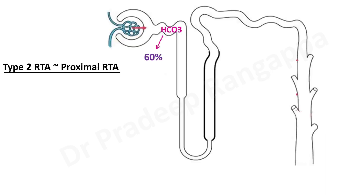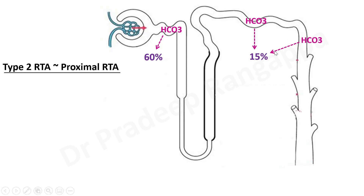Type 2 is proximal renal tubular acidosis — the whole problem lies in the proximal convoluted tubule. Here there is reasonable bicarbonate absorption, so urine pH will be less than 5.5 — the key delineating feature between type 1 and type 2. About 60% of bicarbonate is absorbed in the PCT and 15% from the DCT and collecting tubules. Because bicarbonate is absorbed, there may not be as much acidosis.